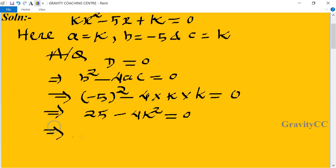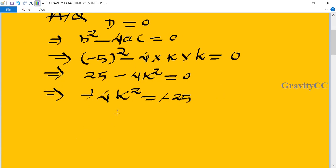Therefore, -4k² = -25. The negatives cancel, so k² = 25/4. Therefore, k = ±√(25/4).